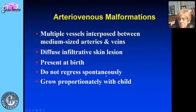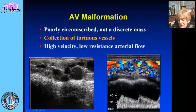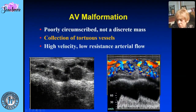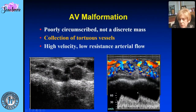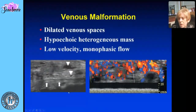There is another high-flow malformation: the arteriovenous malformation, where multiple vessels are interposed between the arteries and veins. It is a collection of vessels with not much soft tissue — diffuse and infiltrative. It is present at birth and will not regress; it grows with the child. On ultrasound it is not a discrete mass — just a group or tangle of vessels extending through the neck. Doppler shows high-velocity, low-resistance arterial flow. It can be difficult to distinguish from hemangioma, but it lacks the discrete soft-tissue mass.